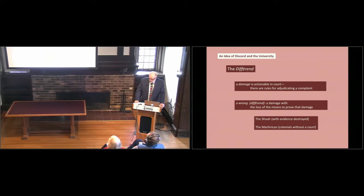This is a wrong, a damage accompanied by the loss of the means to prove that damage. Leotard examines the difficulty for survivors, especially of the Shoah, to describe to others the unimaginable wrong done to them. Another example he uses is the Martinican who can bring a complaint against any infringement on her rights as a French citizen, this is 1983, but who encounters a Différande where she to try to bring a case against France for making her a French citizen.